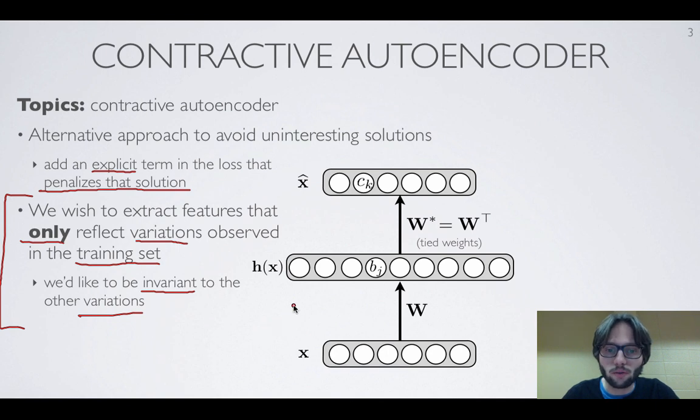So if we have a solution which corresponds to copying each of the inputs individually, then this is really reflecting any possible variation. So any type of variation here will be perfectly reflected in the hidden layer.